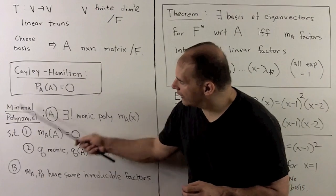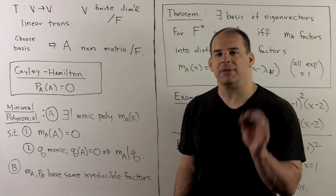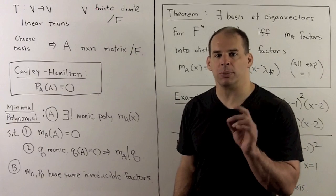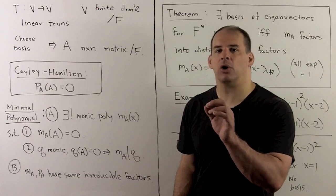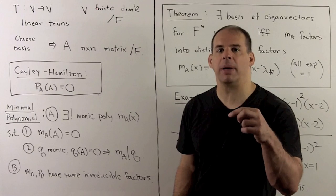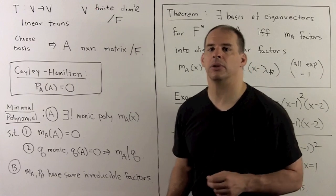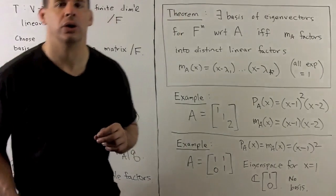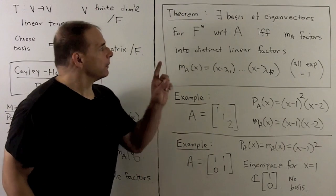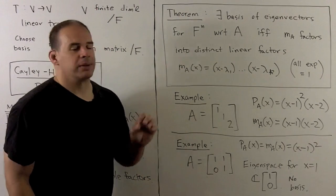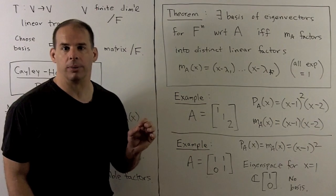We were also able to show that M sub A and P sub A have the same irreducible factors. So once we have the characteristic polynomial, our possibilities for the minimal polynomial are limited. Now we want to characterize matrices that can be put in diagonal form in terms of the minimal polynomial.